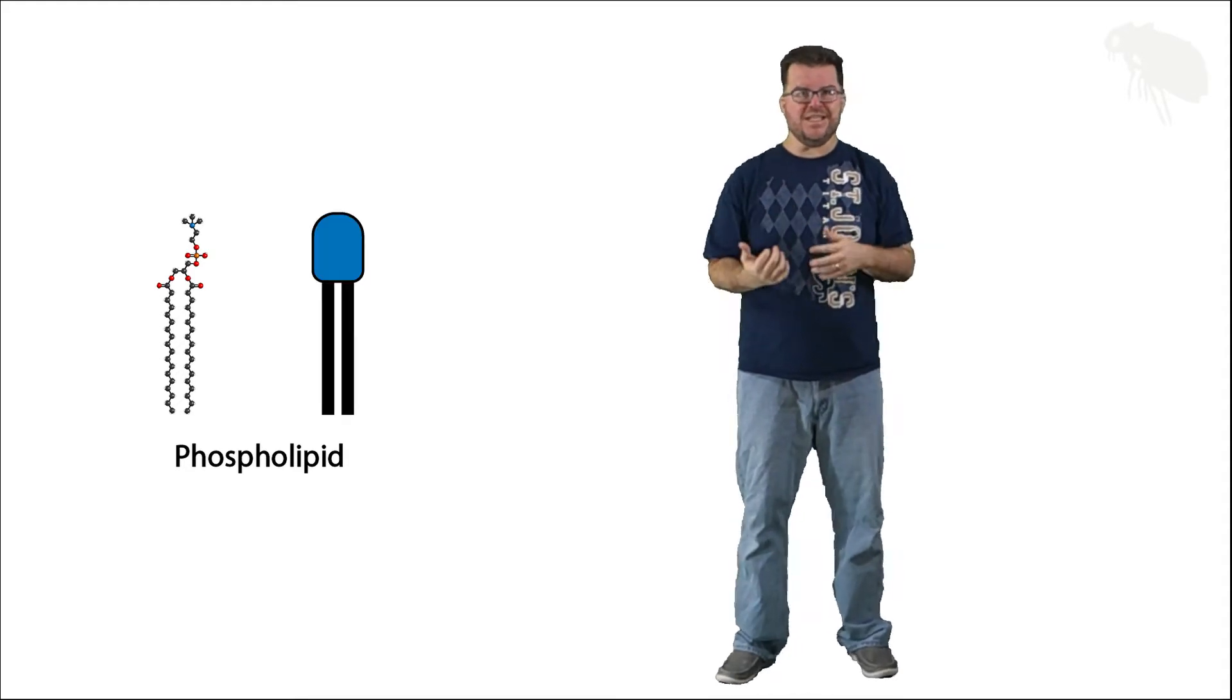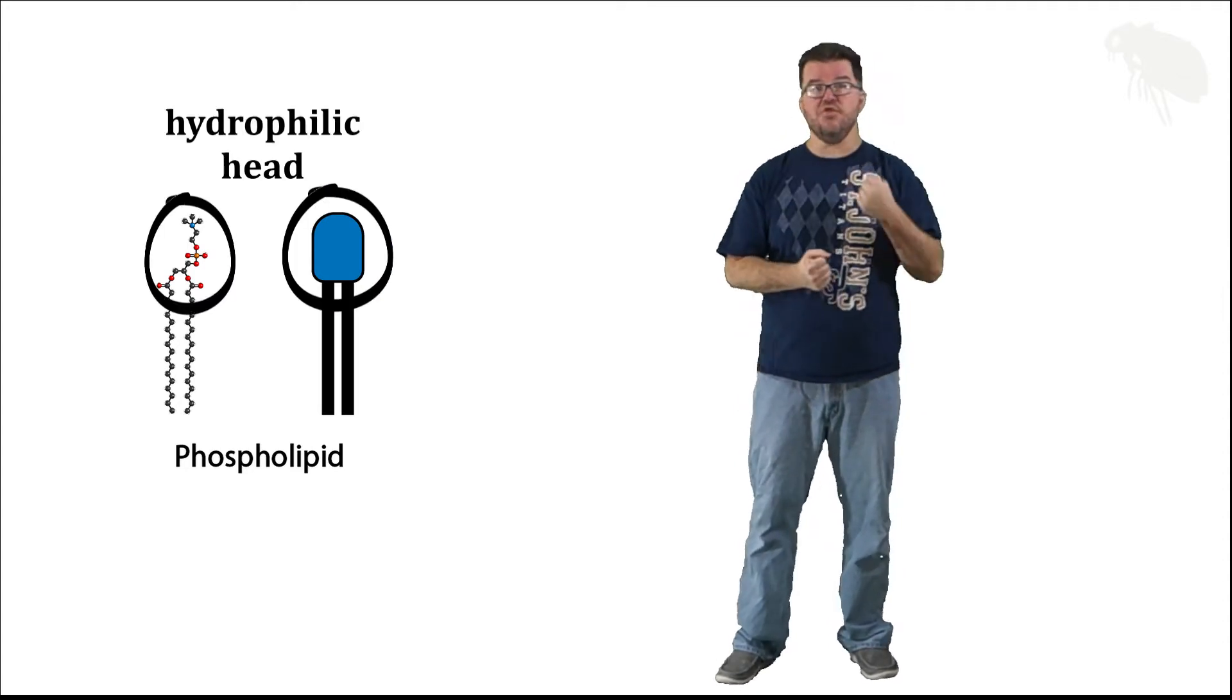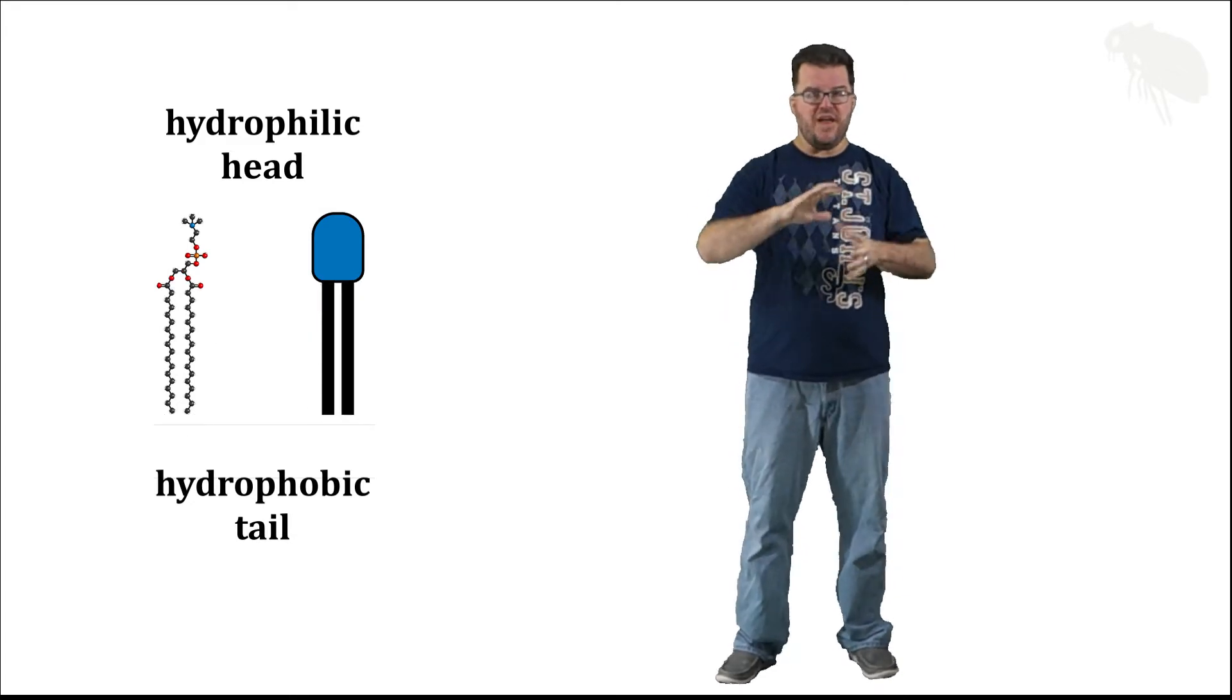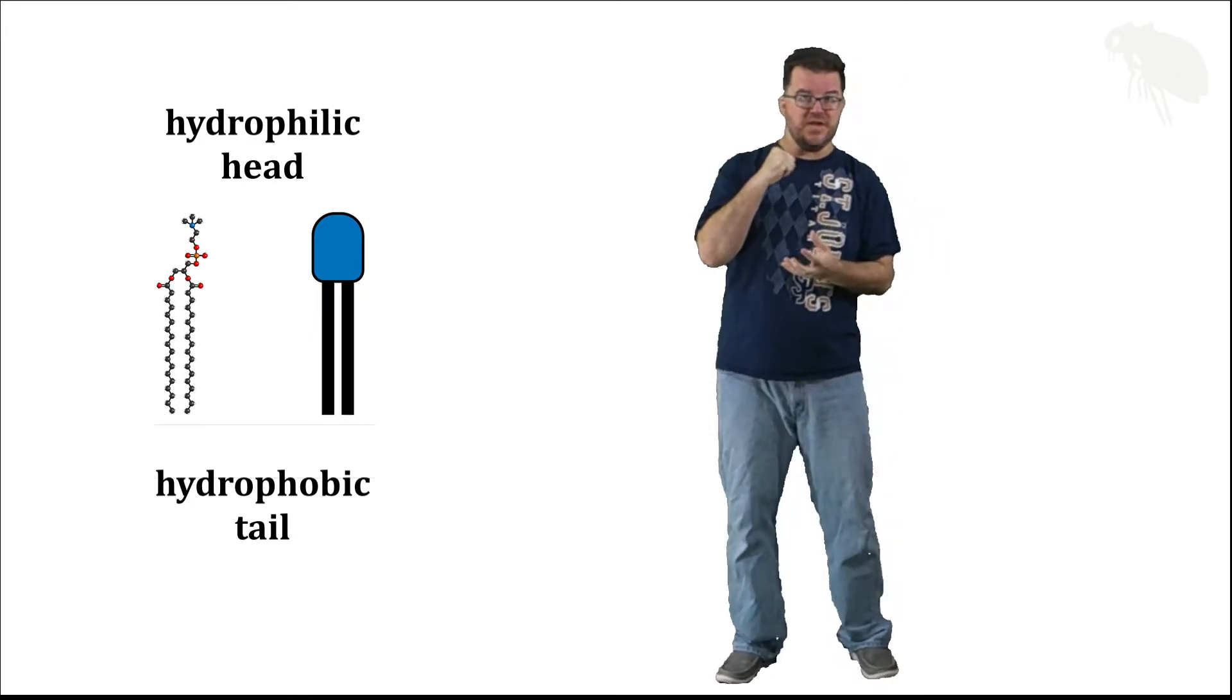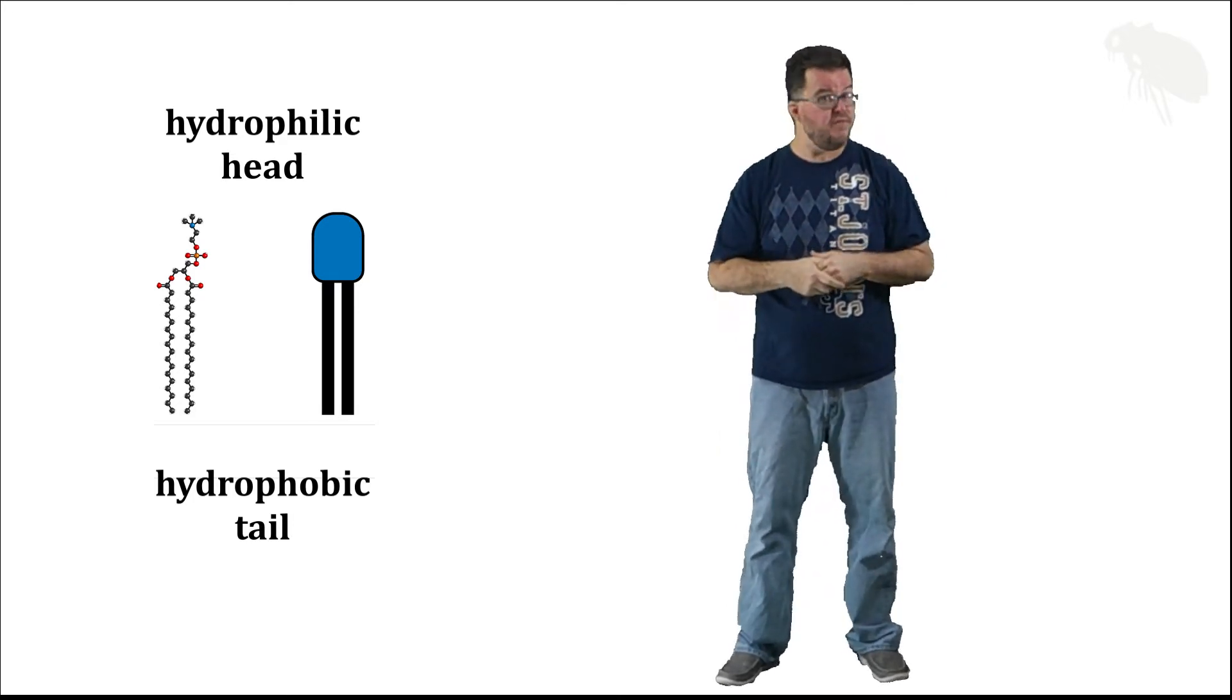Now as you can see here, this is a molecule that is an amphipathic lipid. It's got a hydrophilic head region and a hydrophobic tail region, and the consequence of having a hydrophilic side and hydrophobic side to this fairly large molecule is what happens when you put it into an aqueous environment.